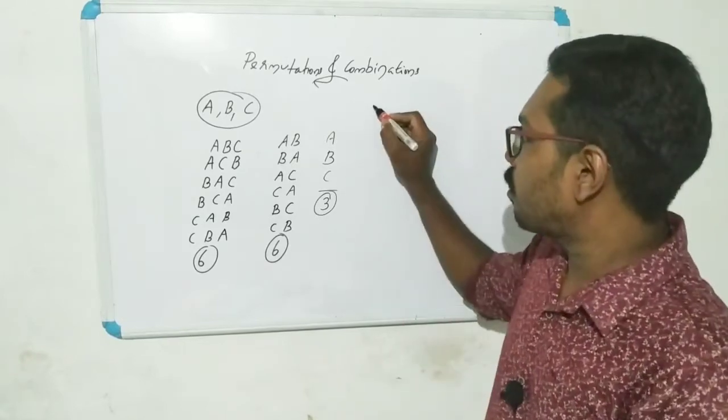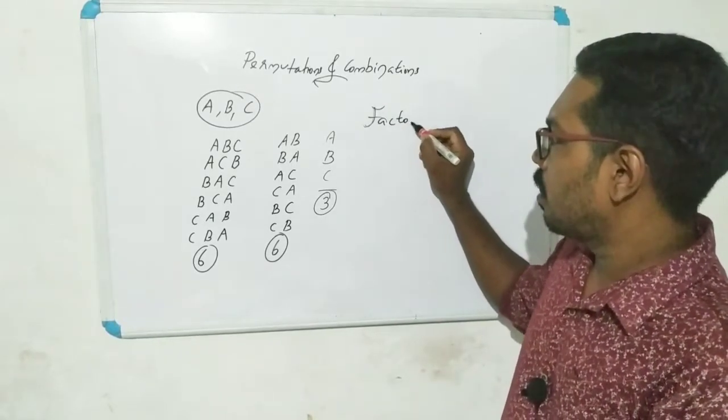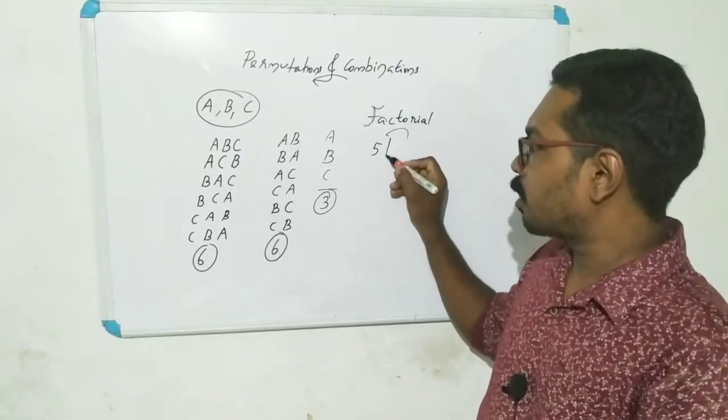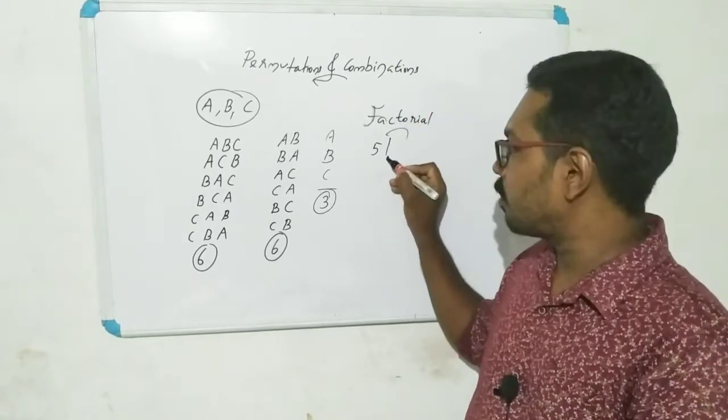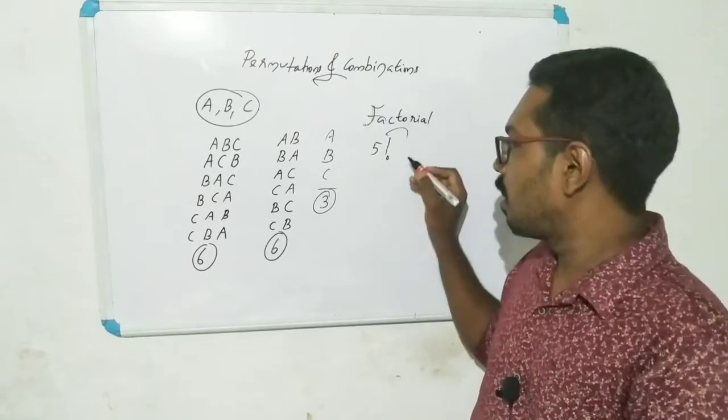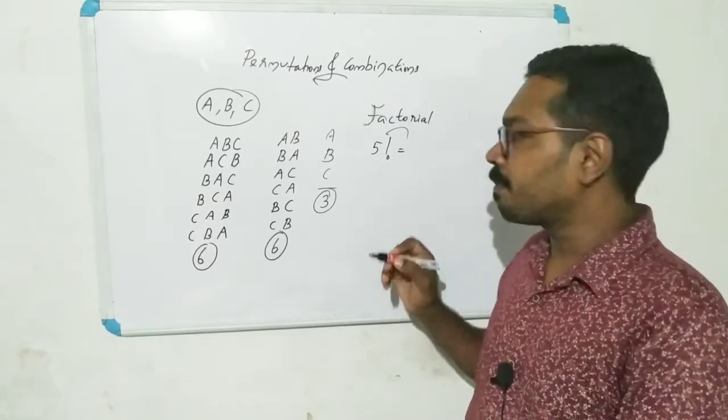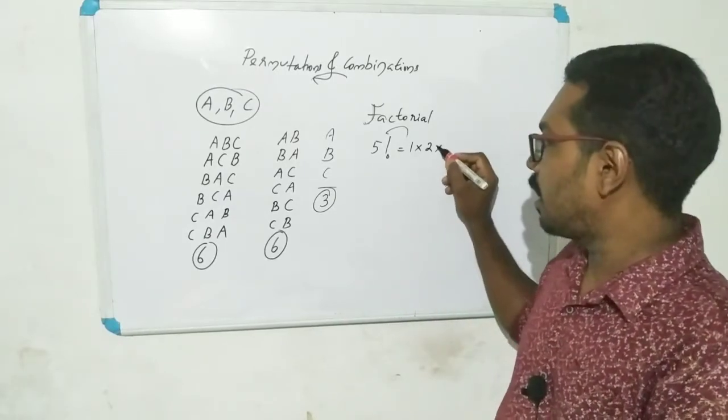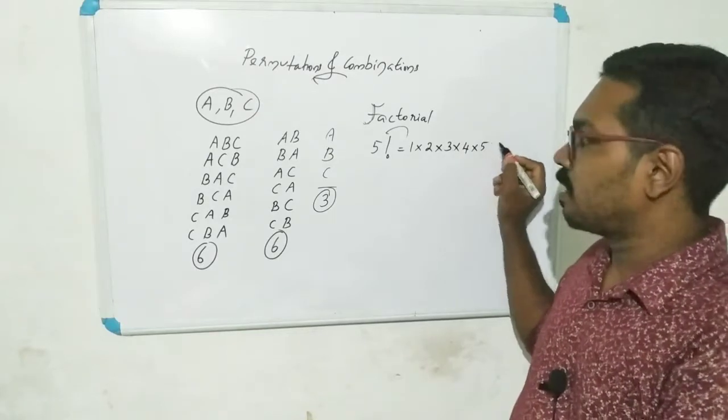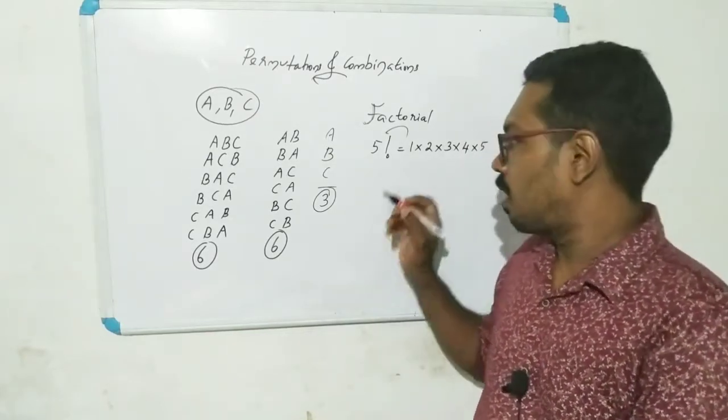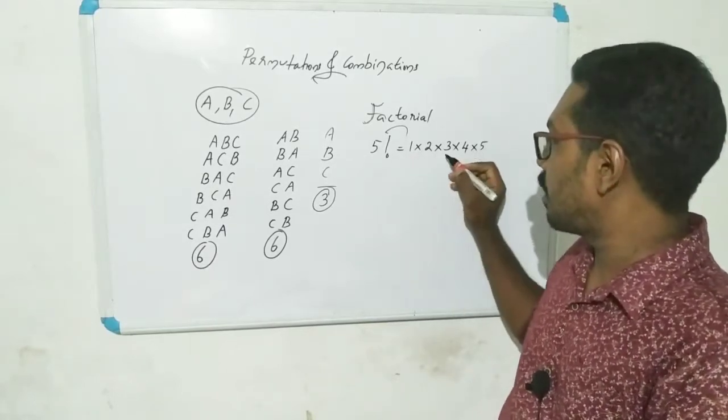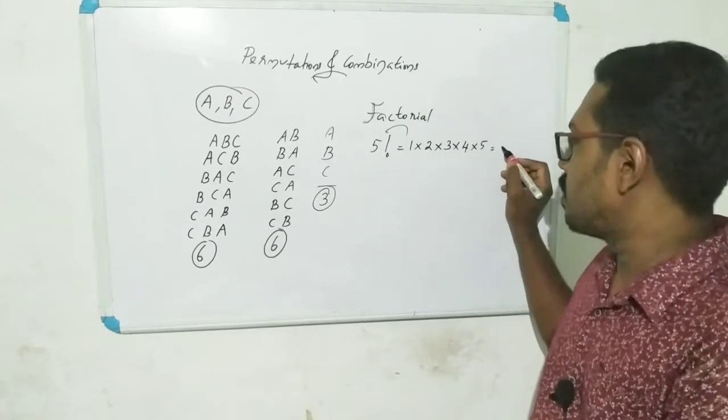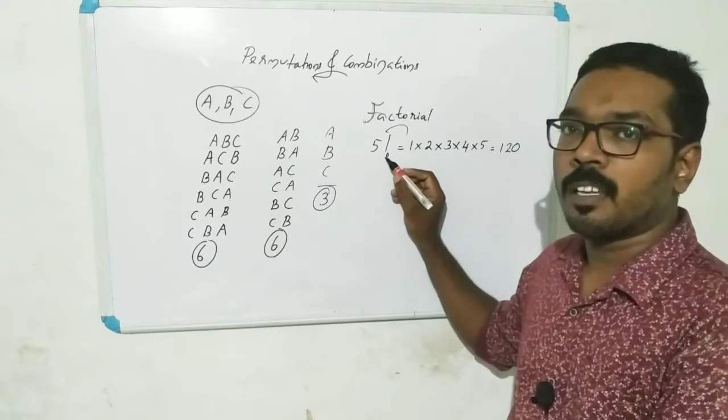Factorial. What is factorial? What is this basic thing? Now, if you say five factorial, it's represented with an exclamation mark. Five factorial means 1 times 2 times 3 times 4 times 5. If you multiply it, 2 times 12 is 24, times 5 equals 120. So five factorial means 120.